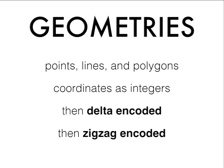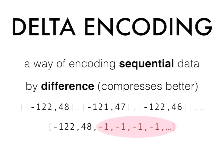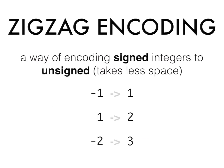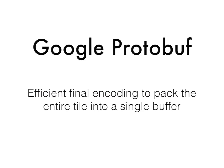There are other optimizations at the geometry level: we delta encode and zigzag encode, which really helps the size of the final encoding. Delta encoding encodes sequential data by difference — instead of encoding original values, you look at the differences between them. If the vertices are nearby each other, you end up encoding small numbers rather than large numbers. Zigzag encoding turns signed integers — potentially positive and negative — into just positive integers, because then you can store that integer in a smaller type, which also saves space. Finally, we use the Google protobuf encoding to serialize it all to a single buffer to pass over the wire in a cross-platform way.